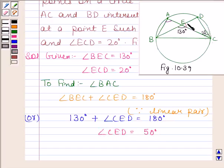So this angle is of 50 degrees. Now consider triangle ECD.